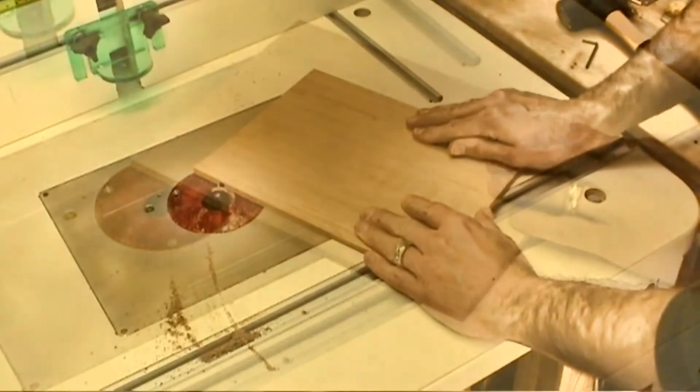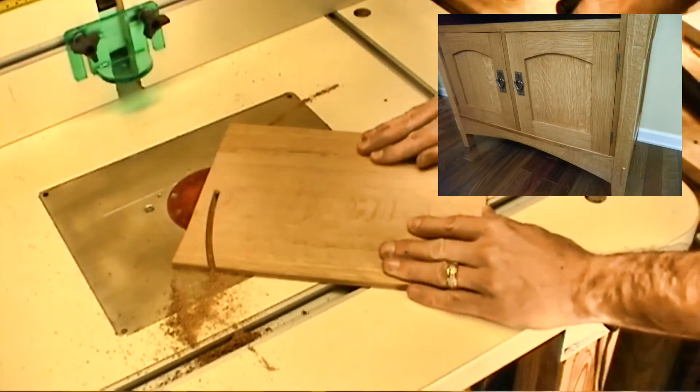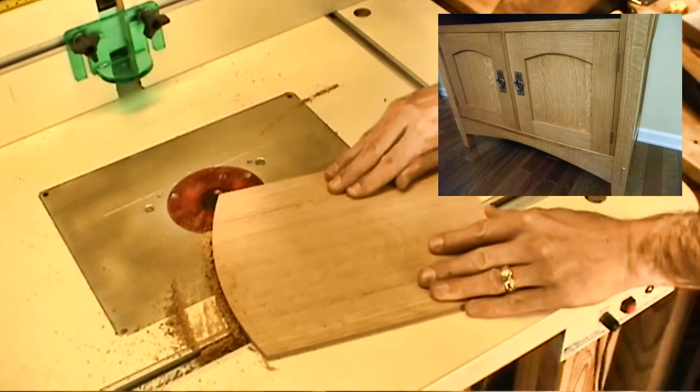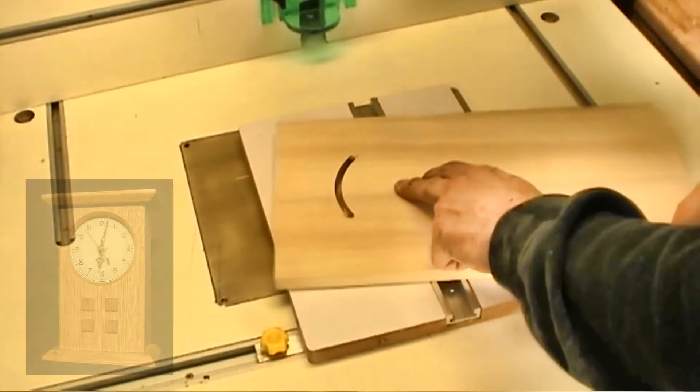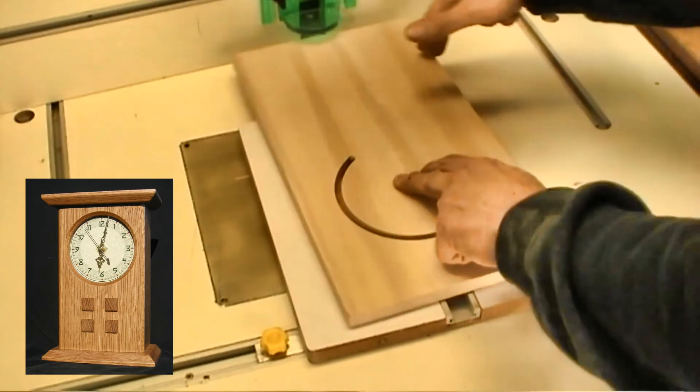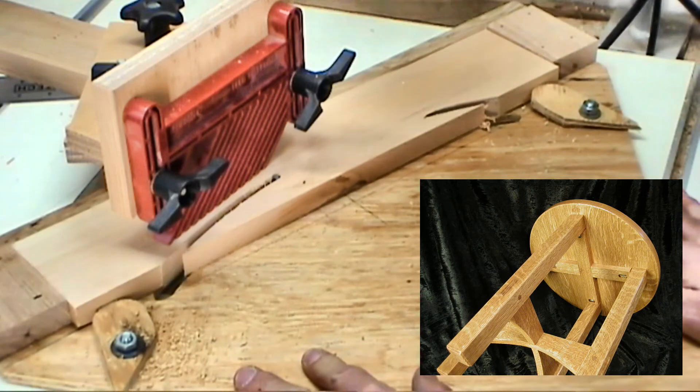You can make more than just circles with this setup. This offset pivot point produces a gentle arc. The circle cut from the center of this board would be perfect for a mantel clock. Using the router table to make the curve in these table parts is a quick and easy approach.